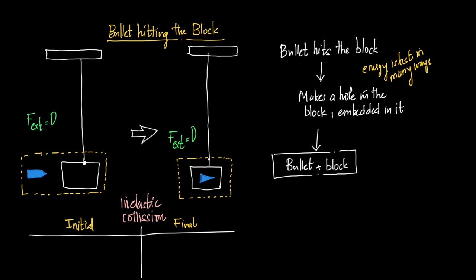Let's try to understand what's given. There is a ceiling, a string is holding a block. We are considering the block and the bullet as a system. When the block and bullet are the system, the net external force acting on this system is equal to zero, because there is no other external force acting on it.